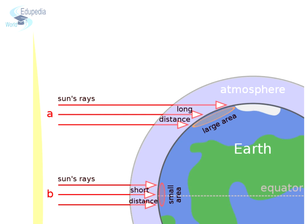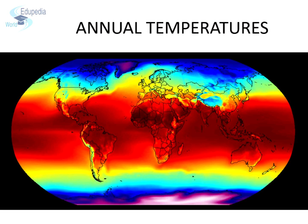If we carefully observe the thematic map of global distribution of heat, we can see the evidence of the same. The mean temperatures clearly show how the amount of heat received near the equator is the highest, shown in dark red, and the temperatures go on decreasing as we move towards the poles, shown in blue color.